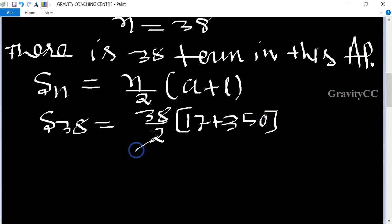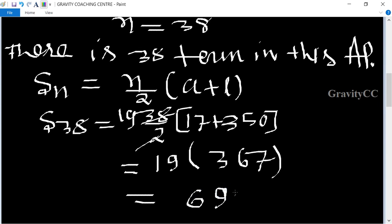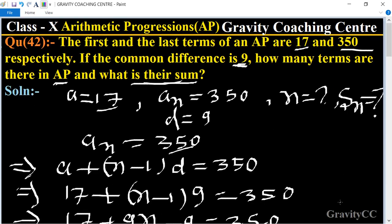So cancel by 2: 19 times 367. So the product of 19 and 367 is 6937, which is the required answer.